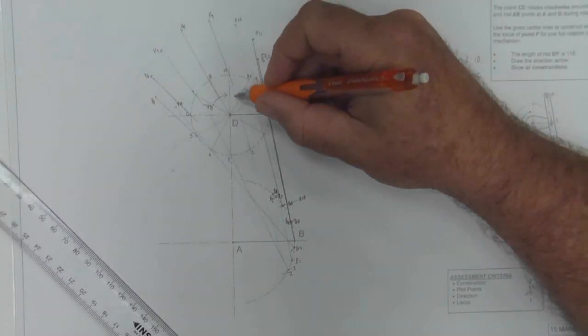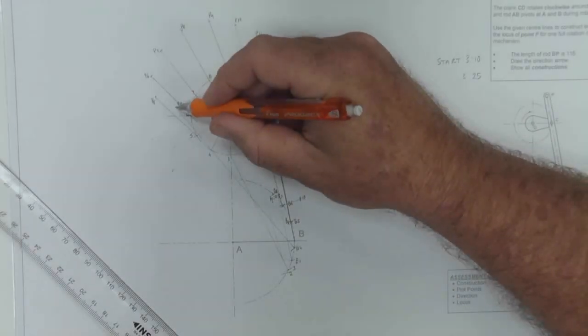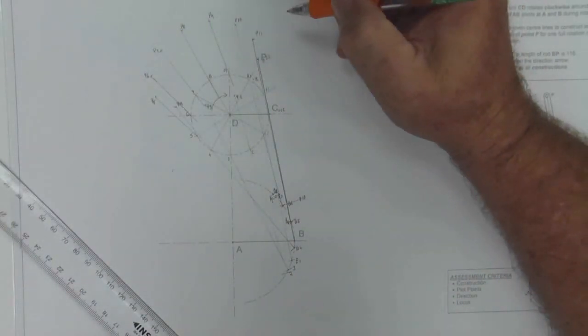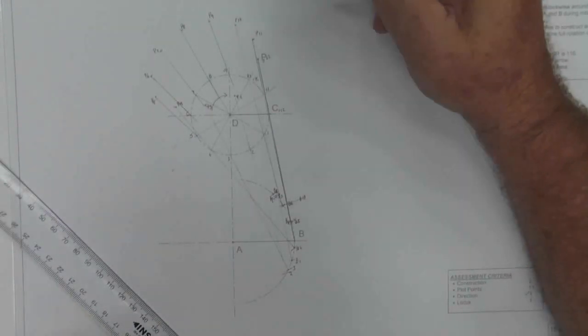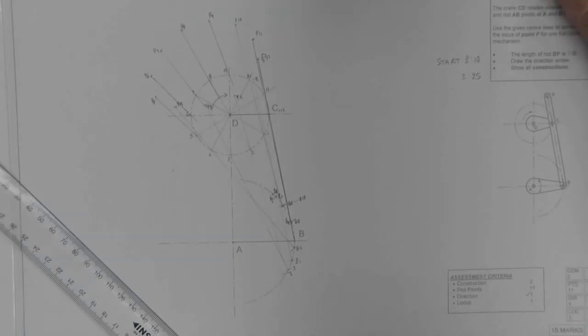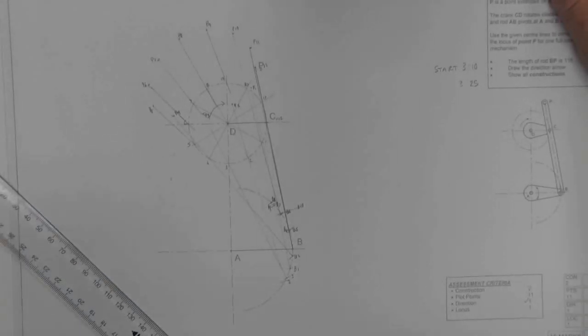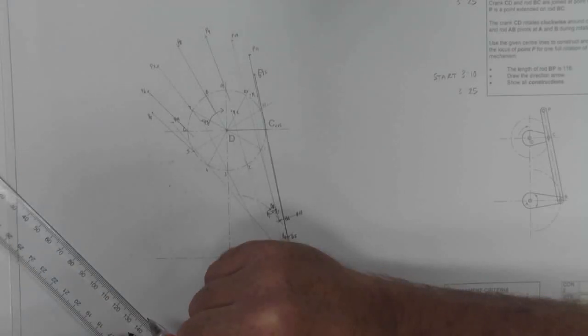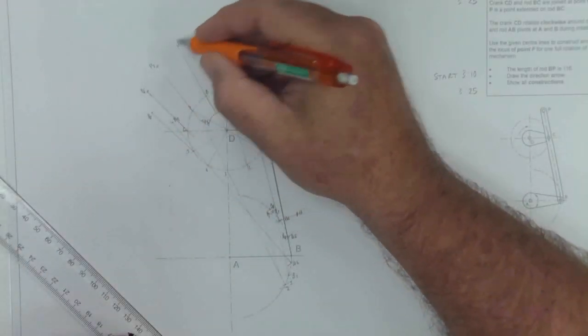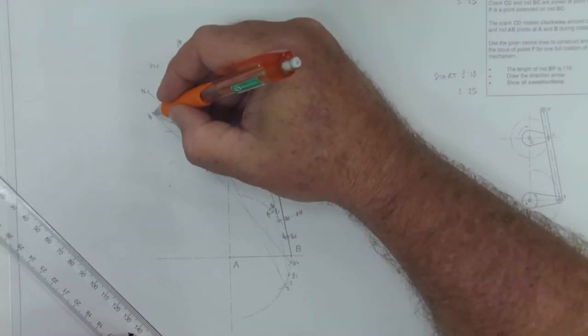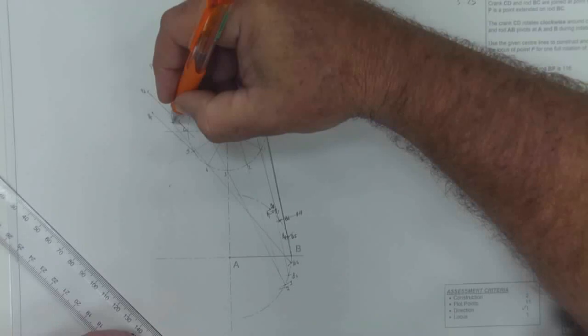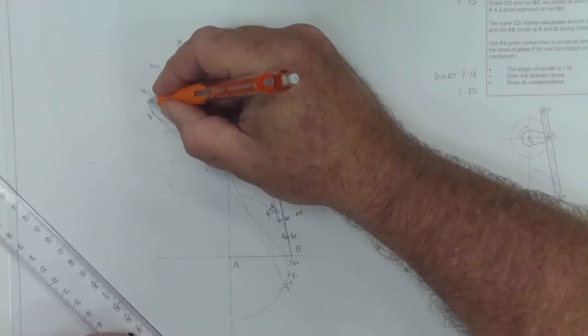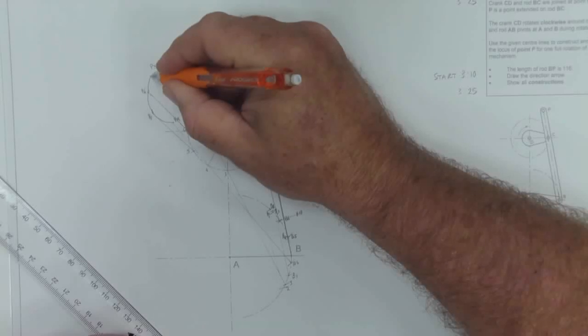Here is P1, P2, P3, P4, P5, 6, 7, 8, 9, 10, 11 and back to the start point. Now if you have got a French curve or flexi curve that would be a nice way to join them. Otherwise try and get a nice curve and draw that in freehand.